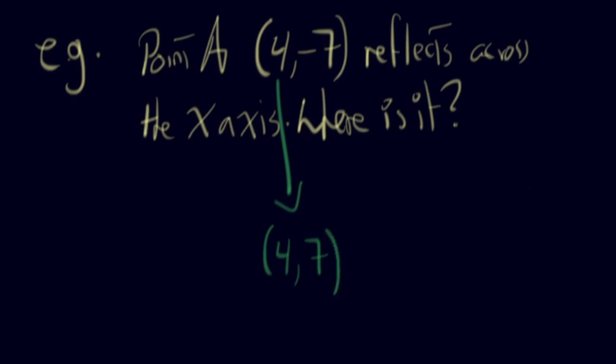What would that actually look like? So there we go. So we had 4, negative 7. So it's going to be somewhere around here, something like that. And it's reflecting across the x-axis. So it's reflecting across this one right there. So it's going to flip kind of up, if you had to look at it. So it would be kind of there. It would still be at 4. But now it would be at 4, 7, like that. So that's kind of how you're going to be asked to do.